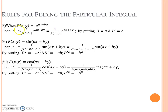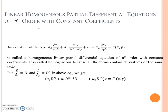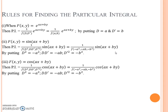Now, rules for finding the particular integral. If f(x, y) is of the form e^(ax + by), then we find PI by putting D equal to a and D' equal to b. If f(x, y) is of the form sin(ax + by), we find PI by putting D² equal to −a², DD' equal to −ab, and D'² equal to −b². The same method applies for cos(ax + by).